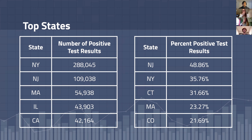Here we have general data concerning the spread of the virus. It has been interesting to observe how the data has changed since we started working on the project. 20 days ago, for example, total cases in New York were around 190,000, which is crazy to think that we've seen an additional 100,000 cases in just 20 days.